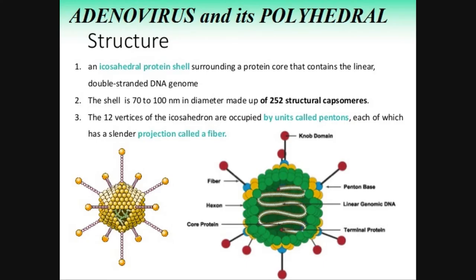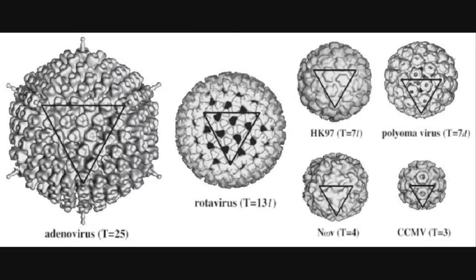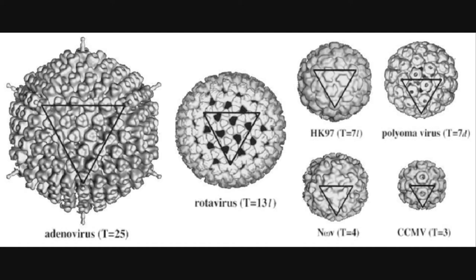Other viruses, such as the adenovirus, have a polyhedral structure surrounding its core of DNA, which is the most proportional, symmetrical, and efficient structure for the proteinaceous capsomers that make up the capsid to form around this particular virus's DNA core.